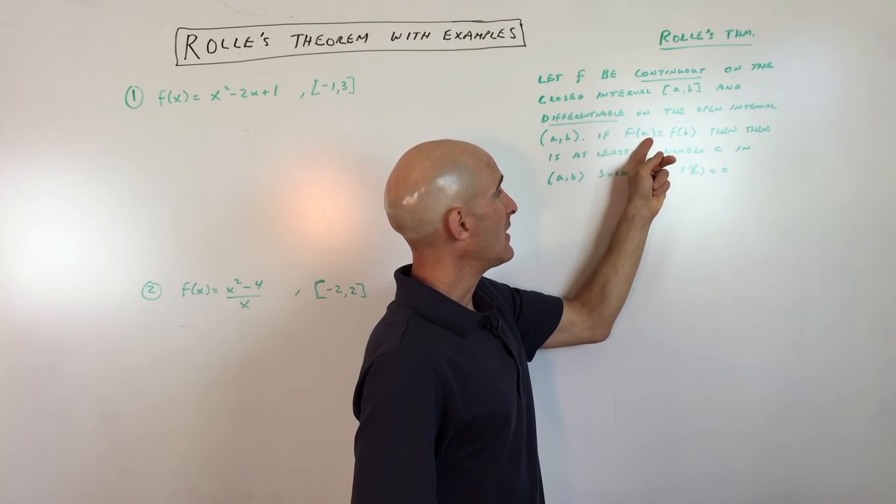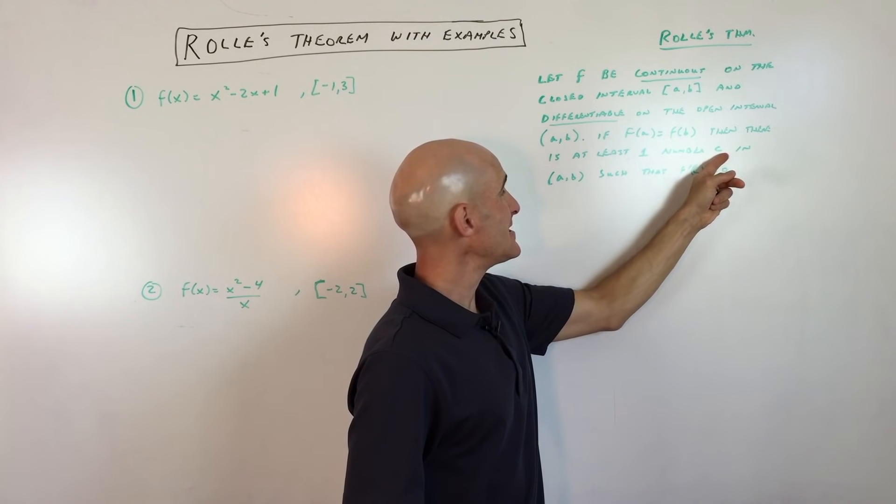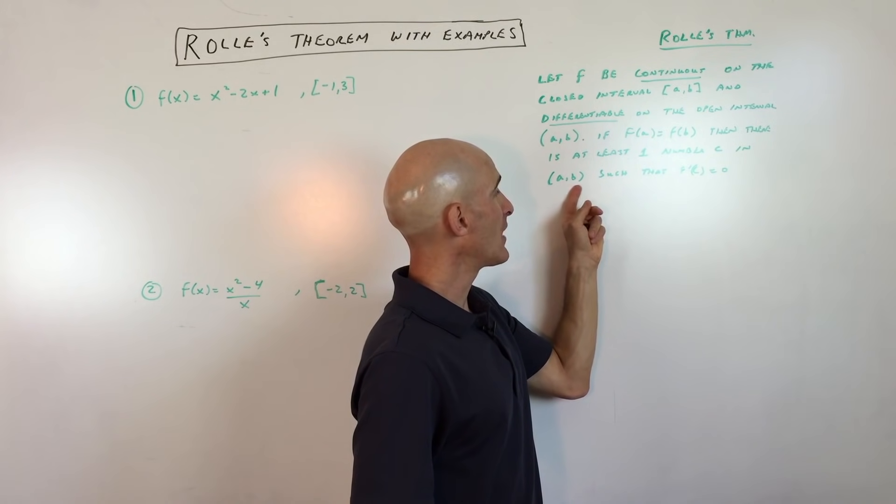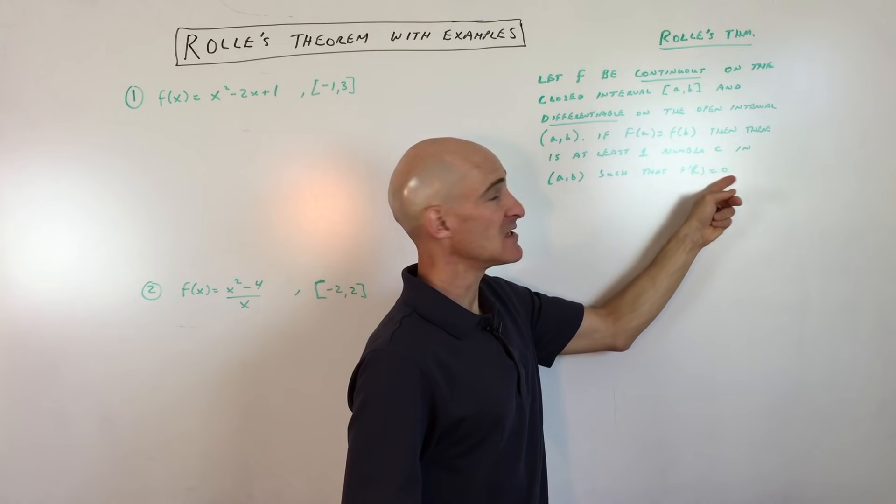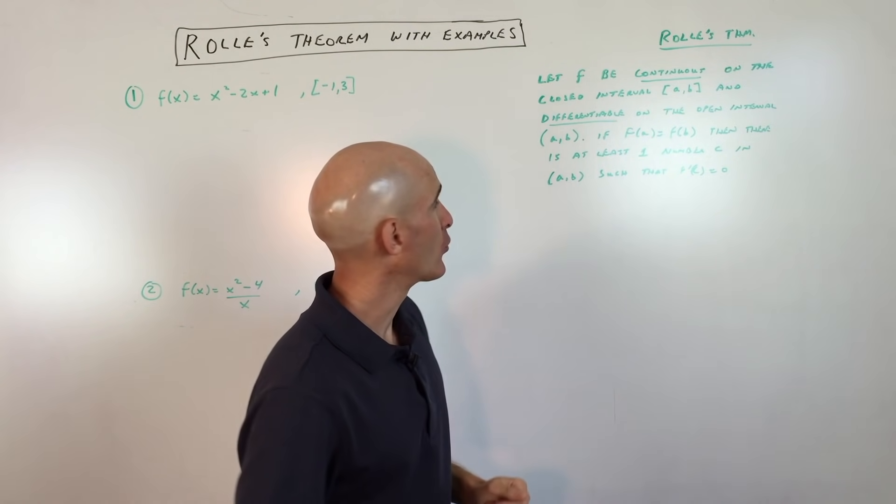And if f of a equals f of b, then there is at least one number c in this interval a to b such that f prime of c equals zero. Let's unpack that real quickly here.